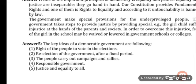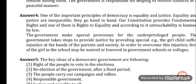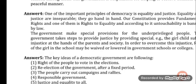Number 1: Right of the people to vote in the elections. Number 2: Re-election of the government after a fixed period. Number 3: The people carry out campaigns and rallies. Number 4: Responsible government. Number 5: Justice and equality to all. This is all about our chapter. We will see in the next video.